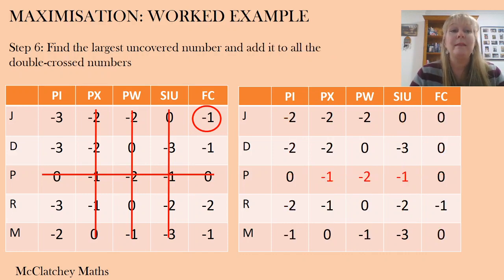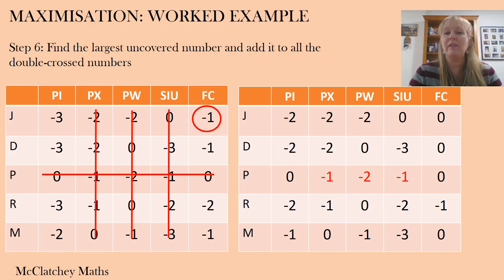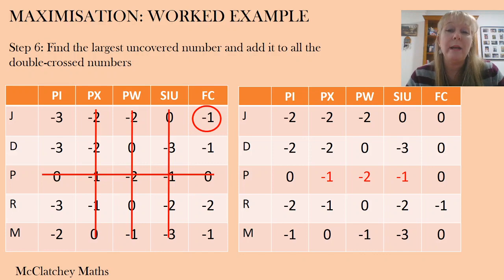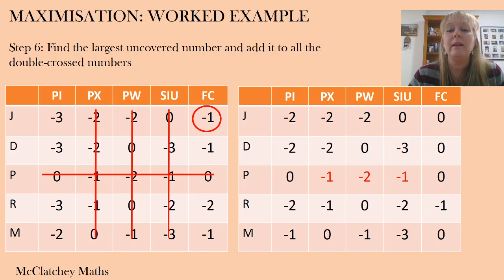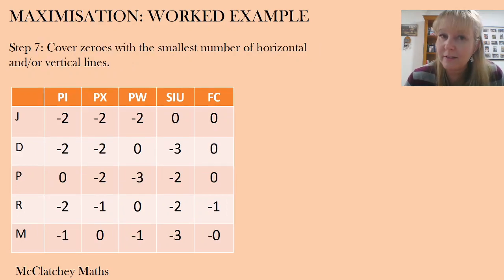That was step five. Step six: we now find that largest uncovered number again and add it to the double-crossed numbers. The easy way to remember whether to subtract or add is that a double cross looks like a plus, so those are the ones we always add to — and it's the only time we add in the Hungarian algorithm. On the right-hand side there are three numbers that have been double-crossed, shown in red through the middle of the matrix. We add negative one to those, and since adding negative one is the same as subtracting, negative one take away one becomes negative two for Pam in that first position.